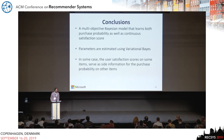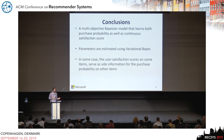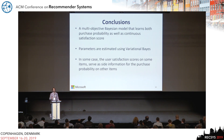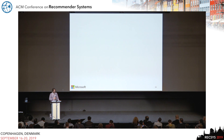To conclude, we introduced a multi-objective Bayesian model that learns both purchase probability and satisfaction score. We trained it with variational Bayes, and in some cases introducing satisfaction scores actually improves prediction of the next purchase. Thank you.